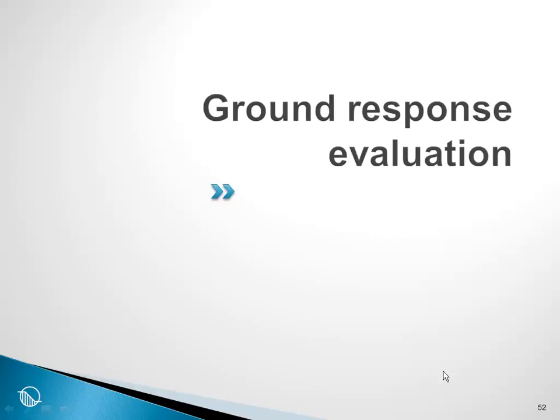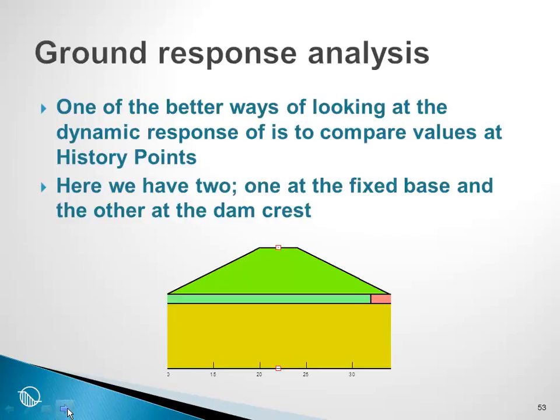One of the objectives of a QuakeW analysis is to evaluate the ground response due to the input of the earthquake record. One of the better ways of looking at the dynamic response is to compare values at history points. We defined two history points, one at the crest and one at the base, and by looking at the acceleration records at these two points, it is a convenient way of getting an appreciation of the ground response.